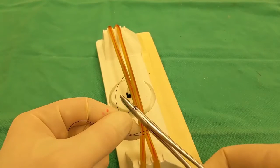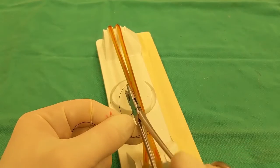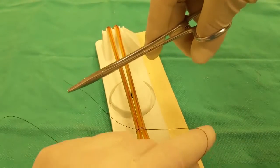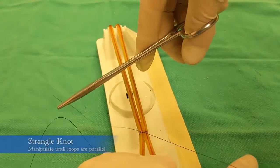The instrument is passed through both loops, so under and through both strands in loops there, and then it is pulled back through and tightened in place, which is when the strangle knot is formed.